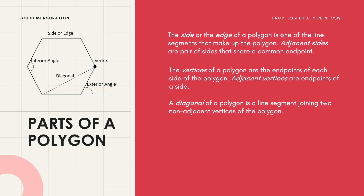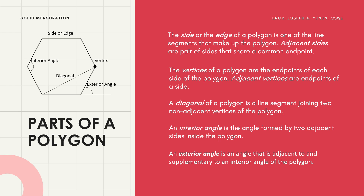As shown in the given figure, two non-adjacent vertices are connected by a line segment called a diagonal. An interior angle is the angle formed by two adjacent sides inside the polygon. The exterior angle is an angle that is adjacent to and supplementary to an interior angle of the polygon.